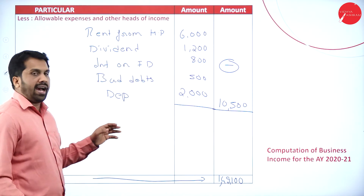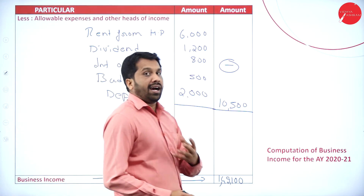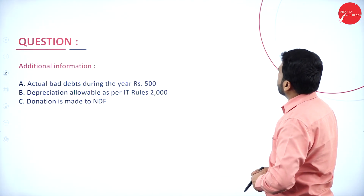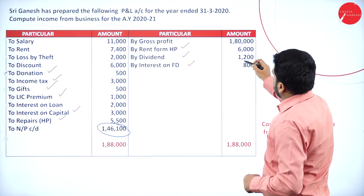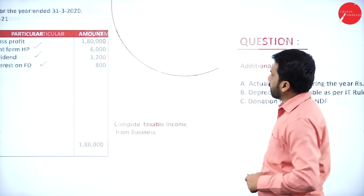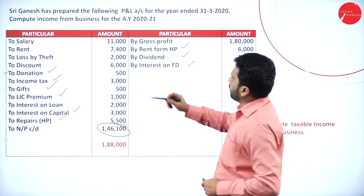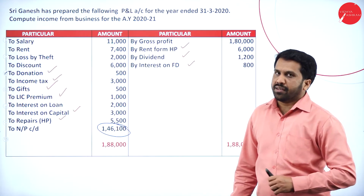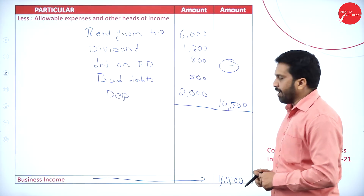To compute business income: you add all non-business expenses (disallowed items) and minus all incomes under other heads plus allowed items. Net profit 1,46,100 plus additions 13,500 minus deductions 10,500 gives business income of 1,49,100.